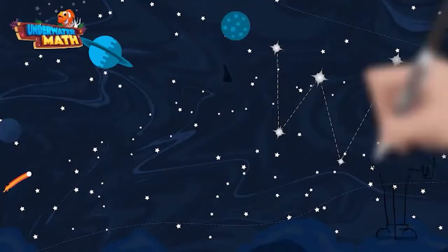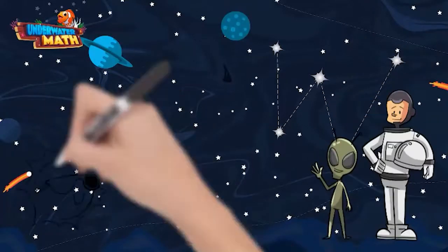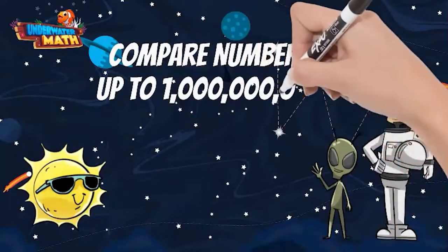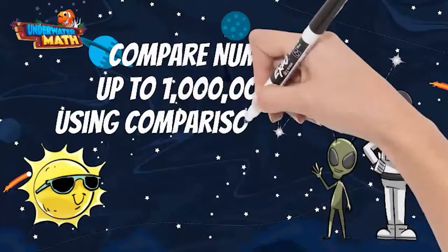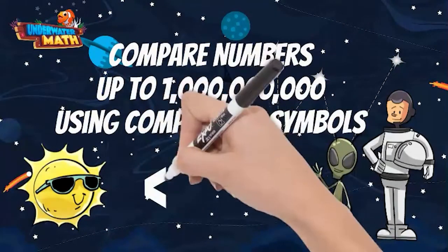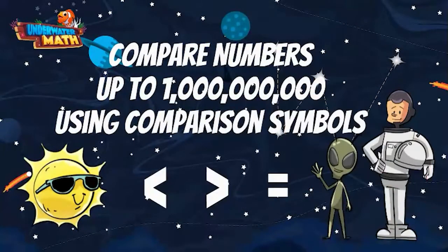Welcome back to underwater math in space. I'm Mastronaut Steve and this is my friend Lenny. Today we are going to talk about comparing numbers up to 1 billion using comparison symbols. Comparison symbols look like this and mean less than, greater than, or equal to.